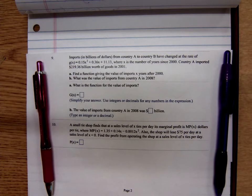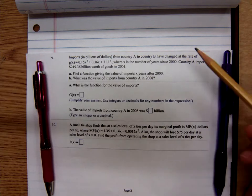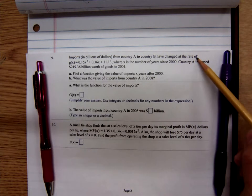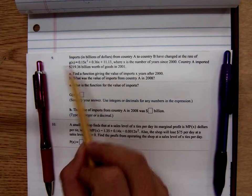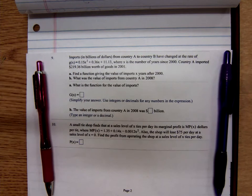So they're giving us the rate of change. Imports have changed at a rate, so that's the derivative. They've given us the derivative of the import function. And they tell us that country A imported $319.36 billion worth of goods in the year 2001.